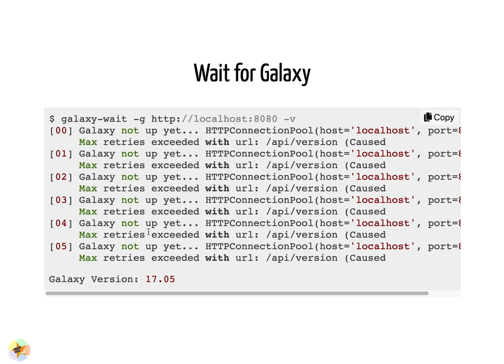There's also the galaxy_wait function, which sends an API request to a Galaxy server to check whether it's running and able to accept requests. If the server is ready it returns straight away; if not, it keeps sending requests. This is useful if you want to run other commands such as shed_tools install and you don't know when Galaxy will be ready.